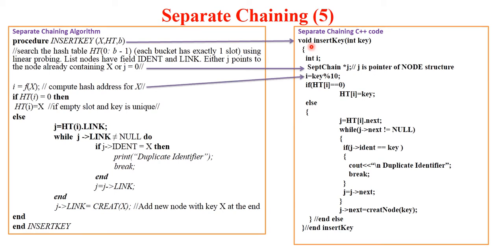Now here first the hash address is computed as usual, that is key mod n. If a slot at that particular address is empty, we will check if HT[i] is 0. If it is 0, that means no key is stored at that slot, so directly our new key will be stored at that particular slot.